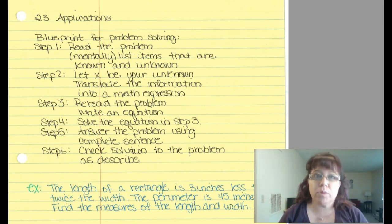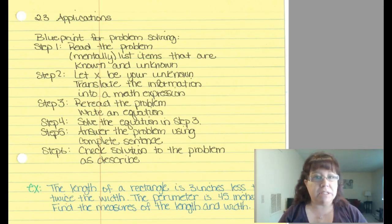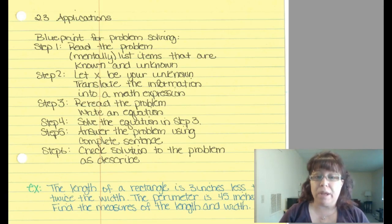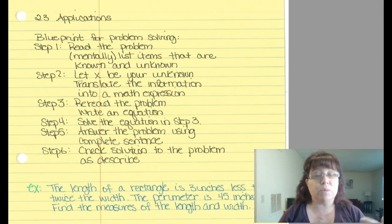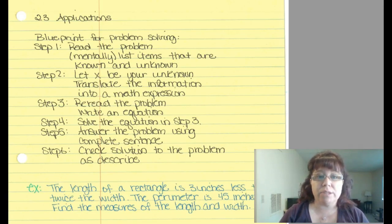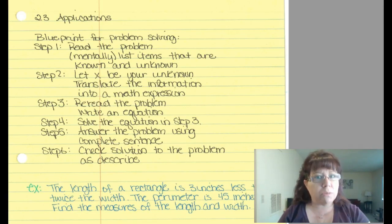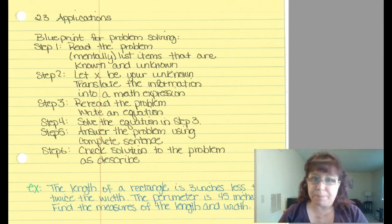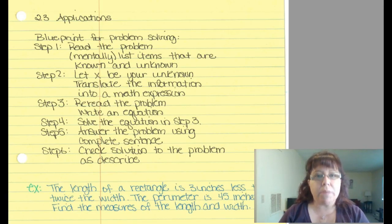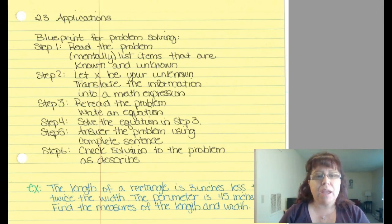First, we want to read through the problem thoroughly — either mentally or on paper — and figure out what we're given, what we know, and those things that we're looking for. Those are our unknowns. The known could be more than what's in front of us; a known could be common knowledge. For example, they're not going to tell you that there are 24 hours in a day — that's common knowledge.